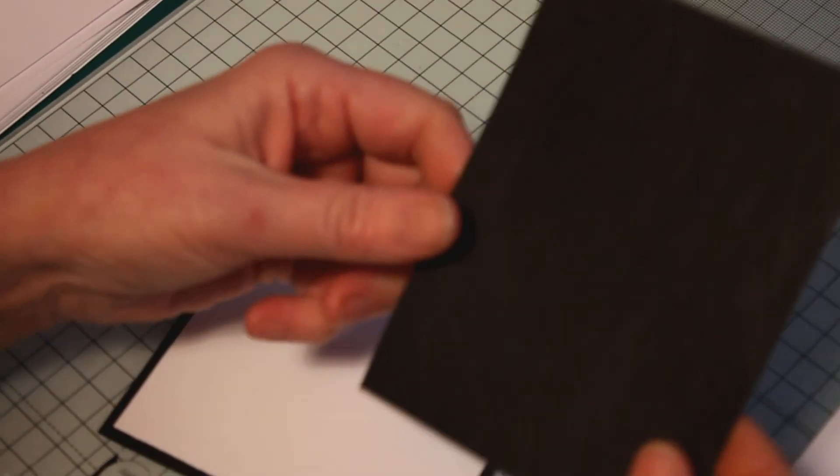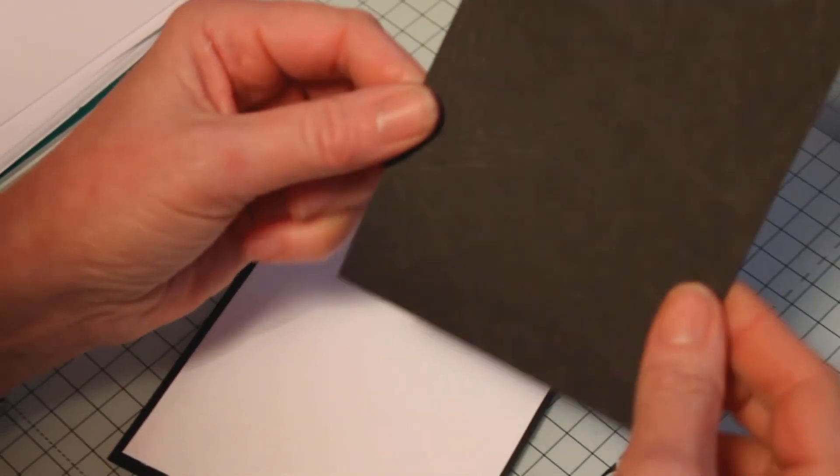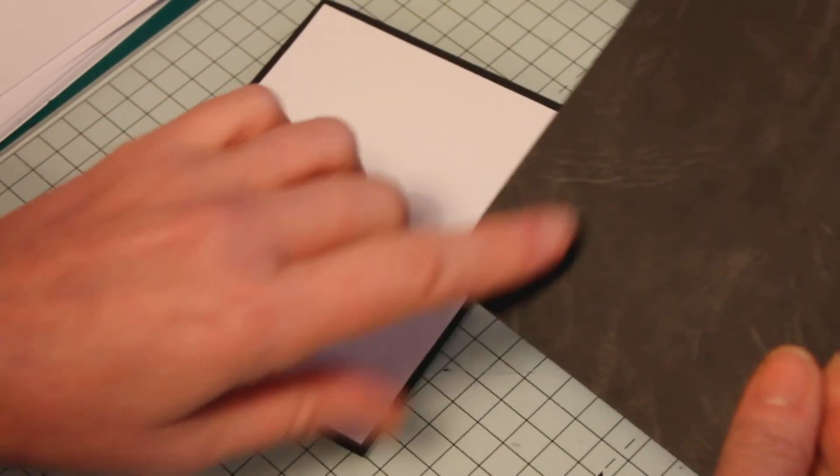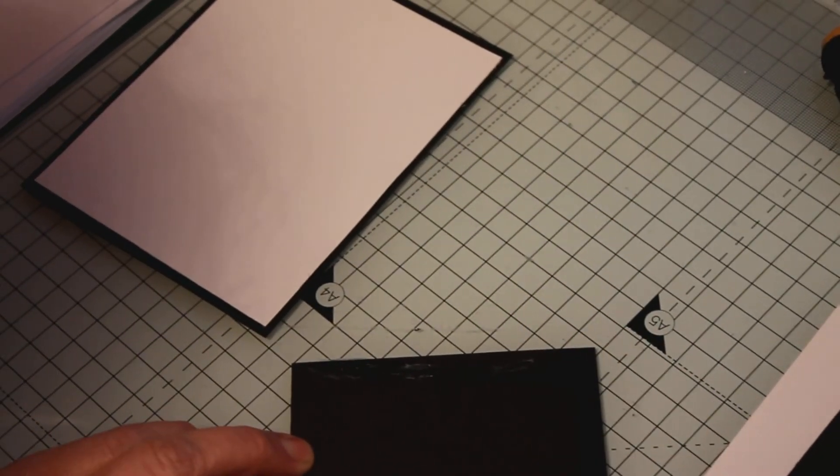Now the next piece is a black piece and this black piece measures five inches by three and three-quarter inches and I've used textured cardstock for this because this is meant to be the actual tuxedo, and again I'm just going to adhere that down.